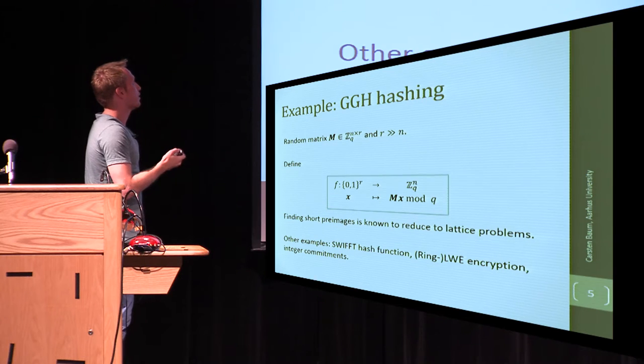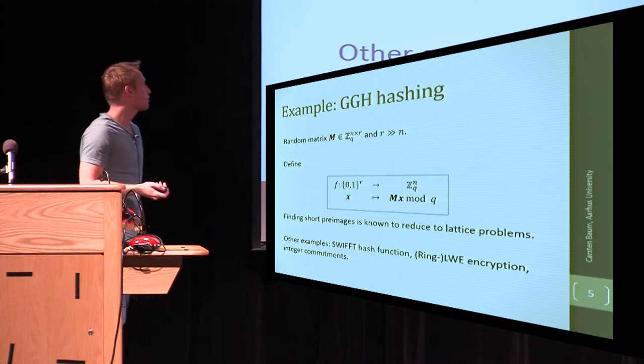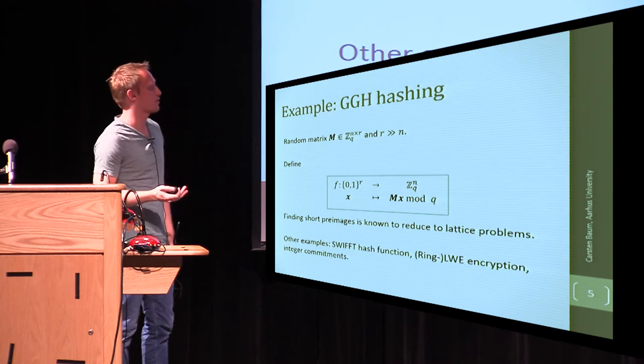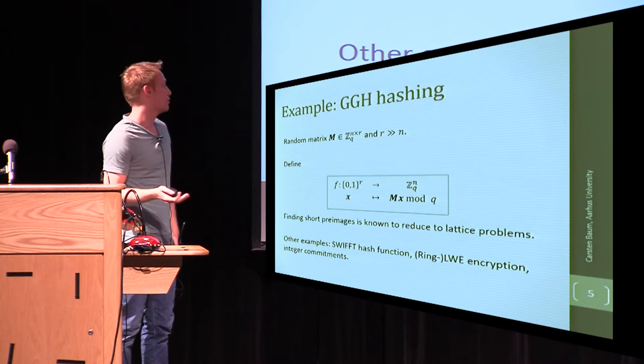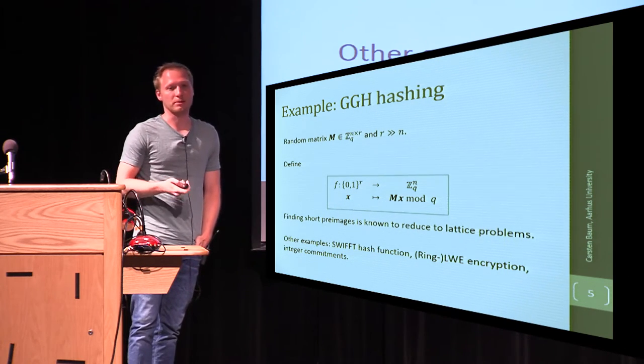Other examples for homomorphic one-way functions would be, for example, the SWIFFT hash function, as I said ring LWE encryption, or for example integer commitments.